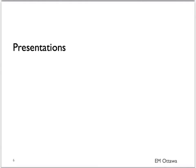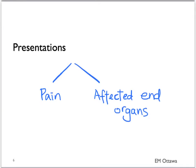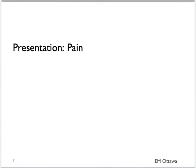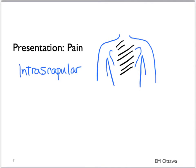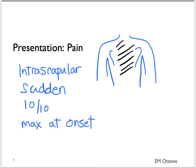How would aortic dissection present? There are two parts of the presentation: pain, and what target organs are being affected. The classic pain for aortic dissection is back pain. This pain is interscapular, severe, sudden at onset, and maximum at onset. Patients sometimes can describe it as a tearing pain.